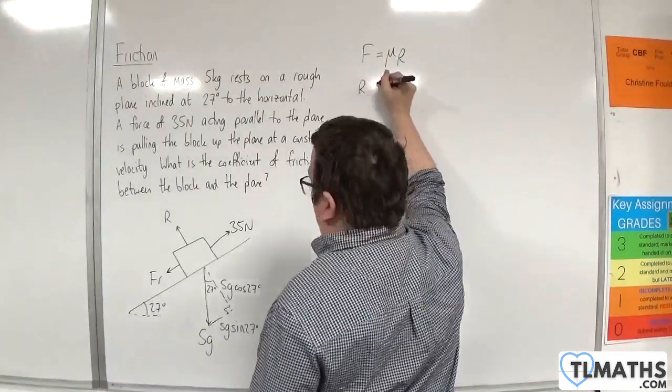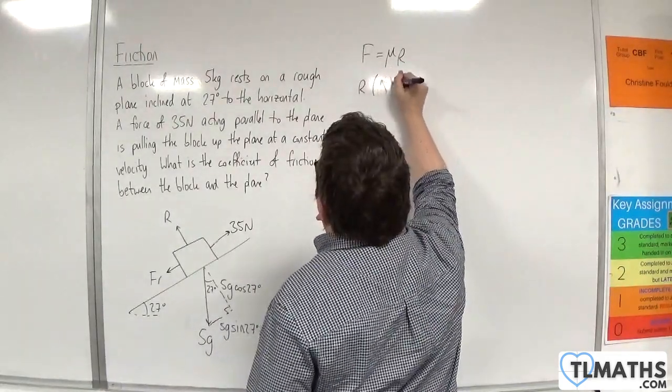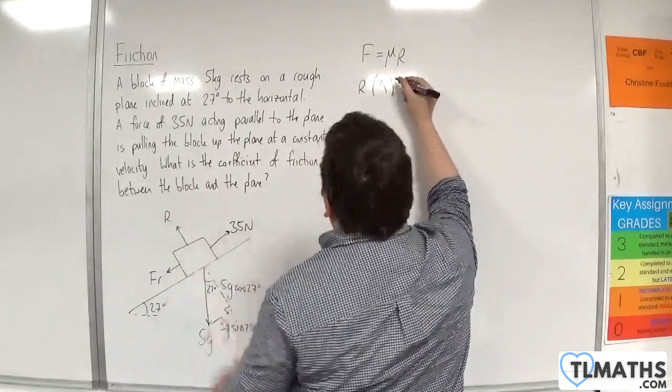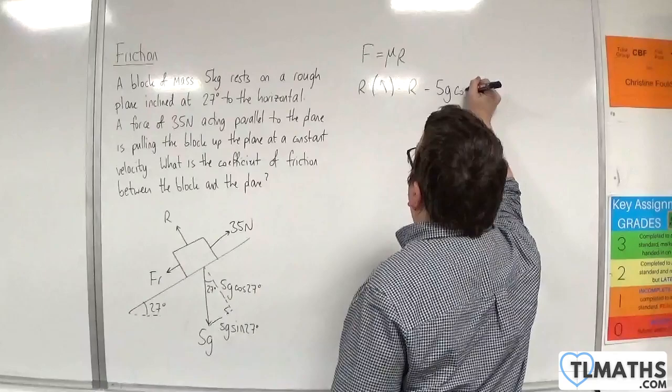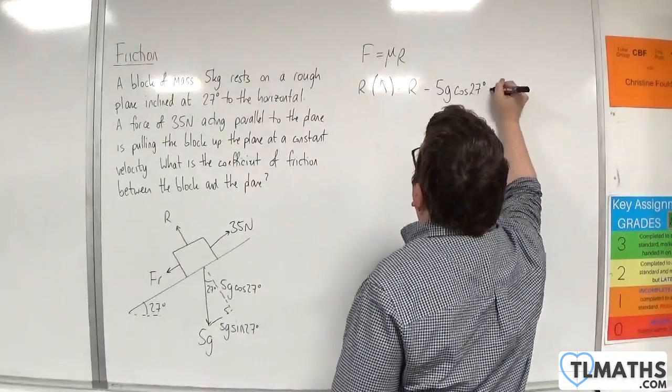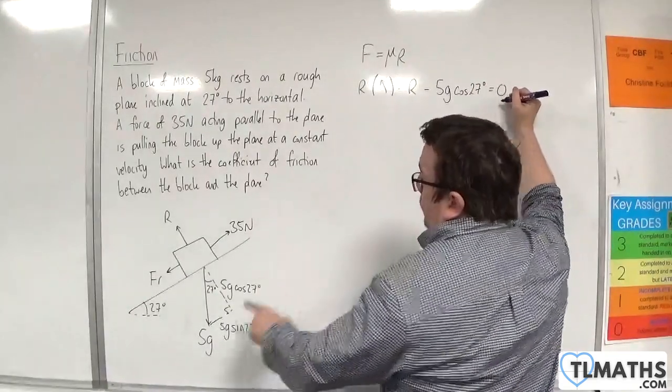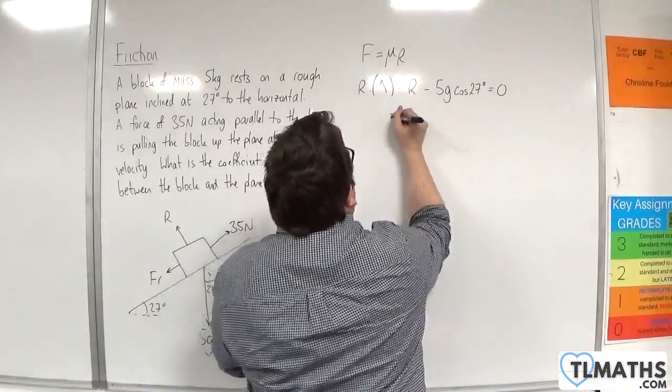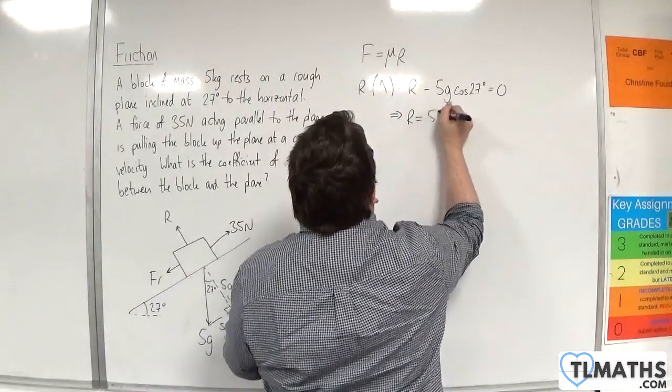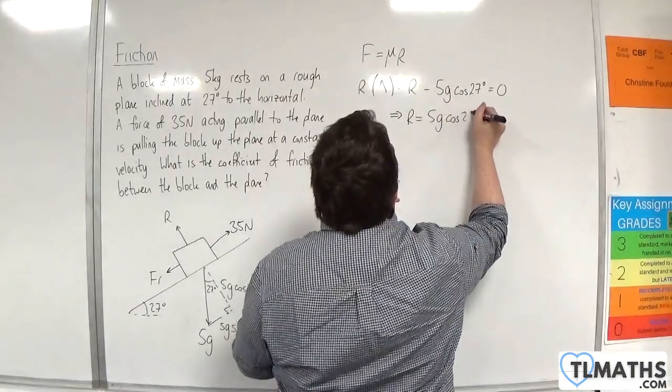If I resolve perpendicular to the plane first, in that direction, we'll have r take away 5g cosine of 27 degrees is equal to 0, because the acceleration perpendicular to the plane is 0. So r must be 5g cosine of 27 degrees.